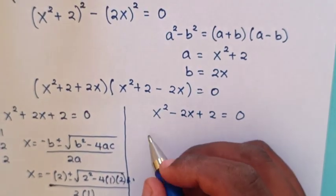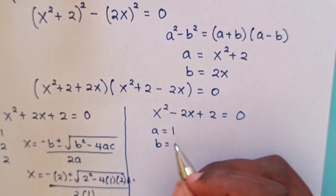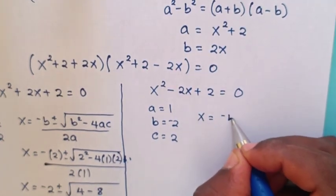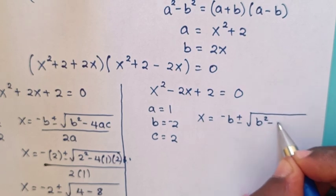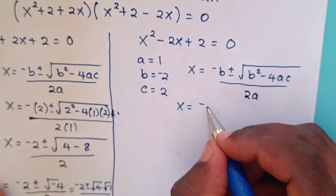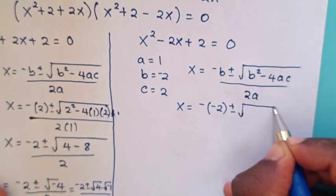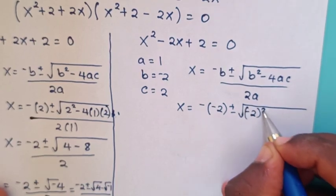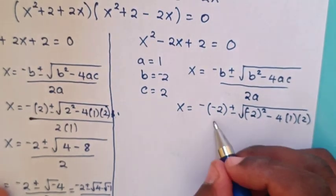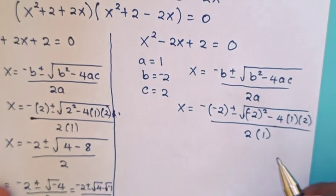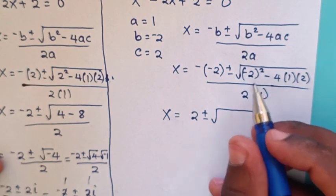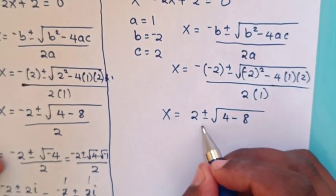For the second case, a = 1, b = -2, and c = 2. From the quadratic formula, x = (-b ± √(b² - 4ac)) / 2a, so x = (2 ± √((-2)² - 4·1·2)) / (2·1).